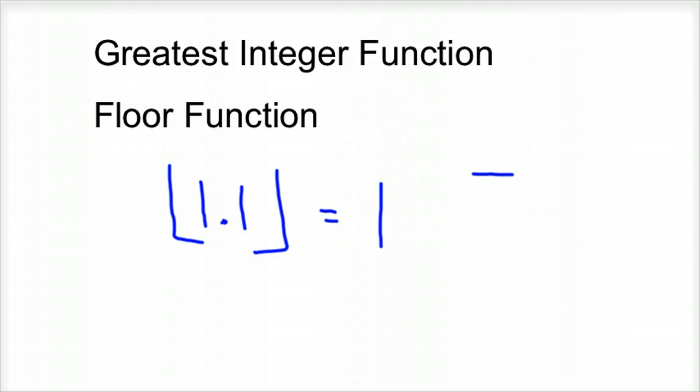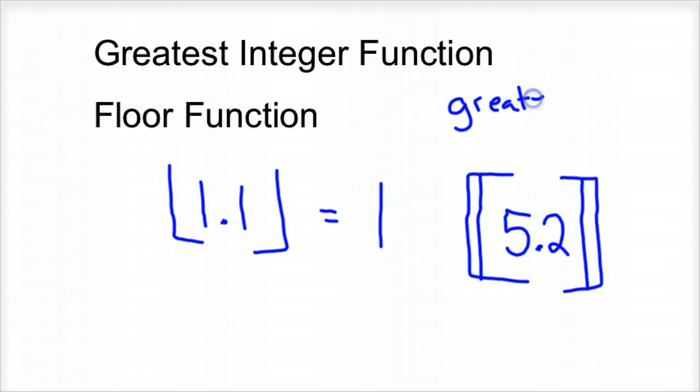Now some other symbols that mean the same thing is this one. This is a floor function as well. And so let's say we had 5.2. The floor function of 5.2 would be the greatest integer less than or equal to the value we're dealing with. So let's say it's n. So 5.2 is my n. So the greatest integer less than that, this is what it produces, is 5. That's the greatest integer less than or equal to 5.2.